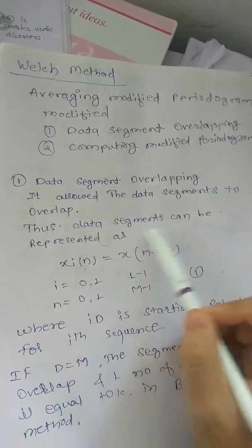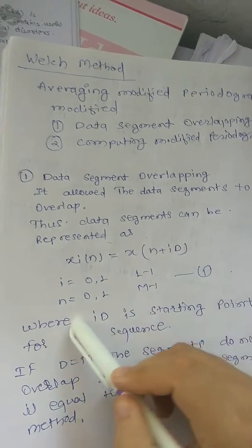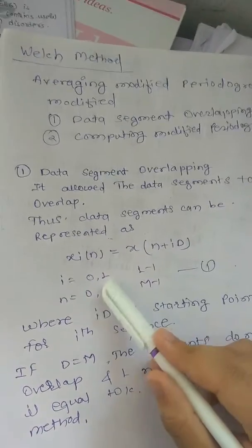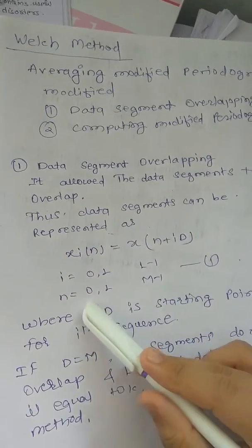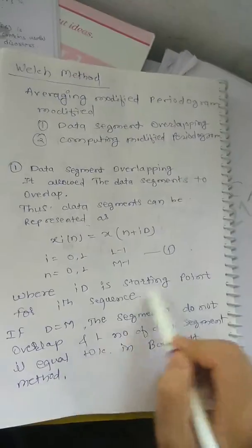The data segments can be represented as x_i(n) = x(n + iD), where i = 0 to L-1, n = 0 to M-1, and iD is the starting point from the i-th sequence.